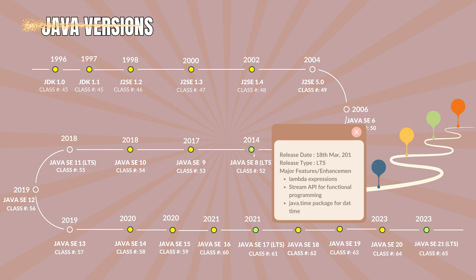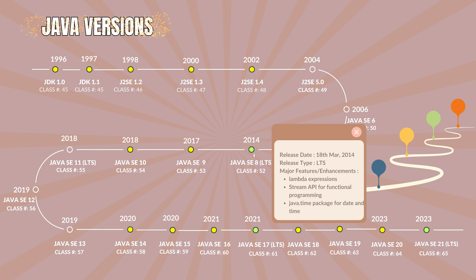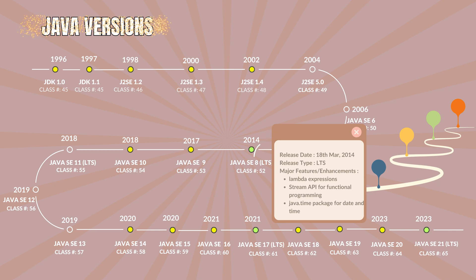Java 8.0 with the class file version 52. It was codenamed as Spider. It was released on 18th March 2014. Release type is long-term support version and a landmark release. The major features and enhancements are the introduction of Lambda expressions, the Stream API for functional-style processing of sequences of elements, the Java Time Package for modern date and time handling, and the Nashorn JavaScript Engine.